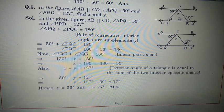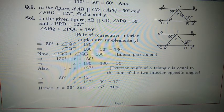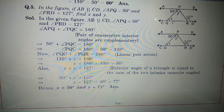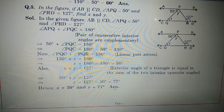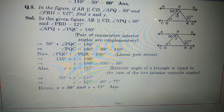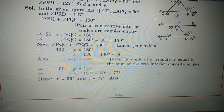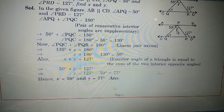X plus Y equals 127 because in triangle PQR, angle PRD is the exterior angle. You know exterior angle equals the sum of interior opposite angles, so 127 equals X plus Y. X is already 50, so Y equals 127 minus 50, which is 77. So X equals 50 degrees and Y equals 77 degrees.